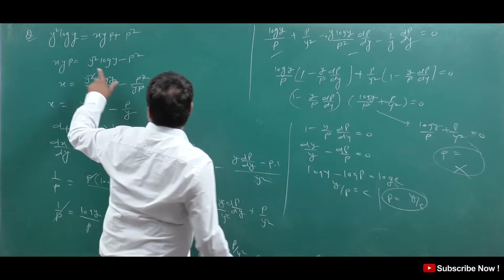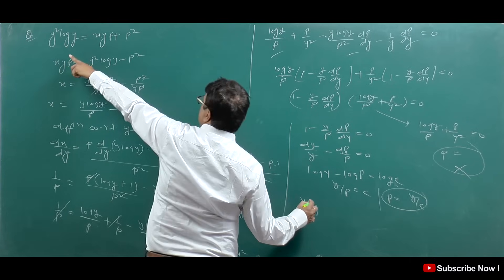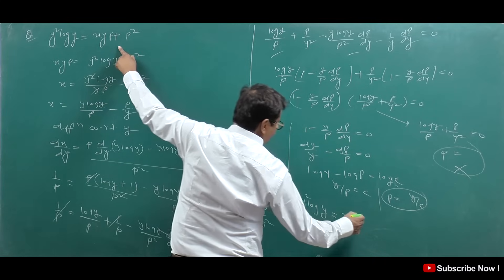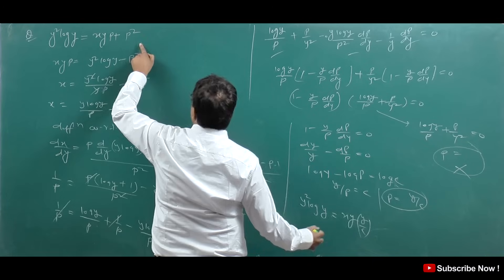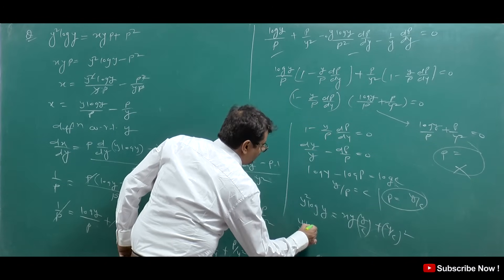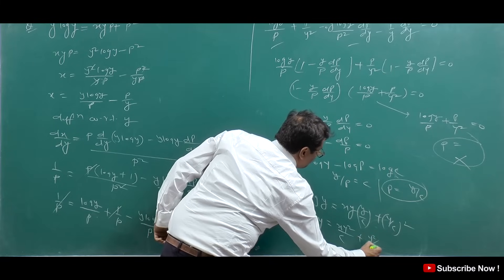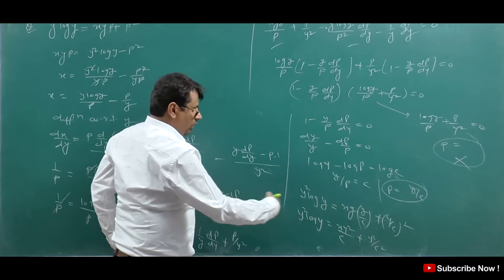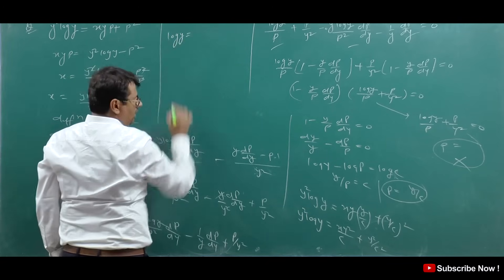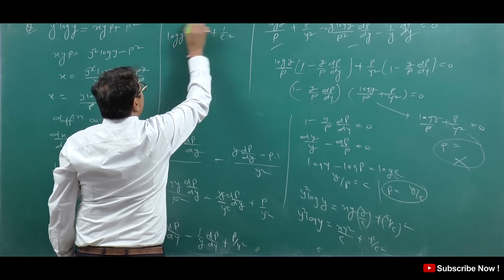So the P value is P = Y/C. We now put this back into the original equation. Y² log Y = XY · (Y/C) + (Y/C)². So Y² log Y = XY²/C + Y²/C². Dividing through by Y², we get: log Y = X/C + 1/C². This is our final answer.